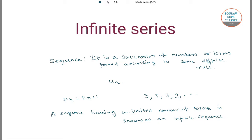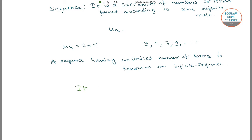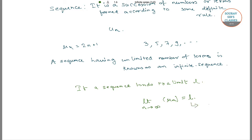If a sequence tends to a limit L, then we write: limit as n tends to infinity of un equals L. If this limit of a sequence is finite, then the sequence is convergent.